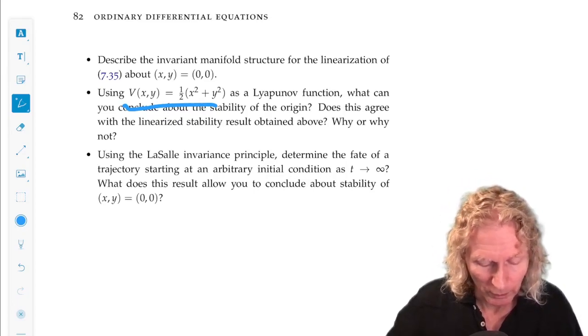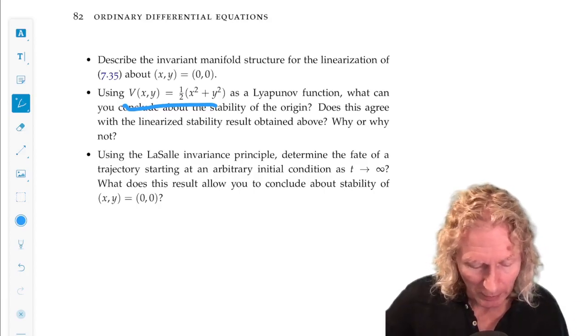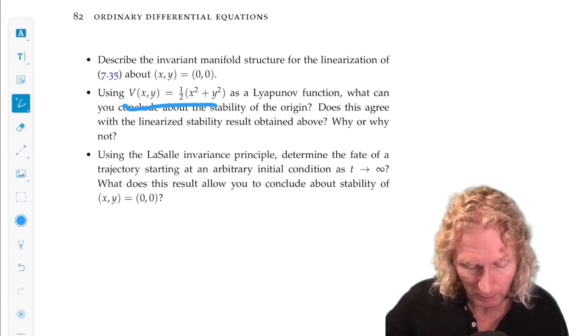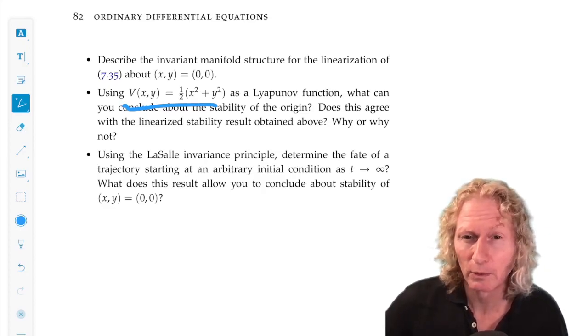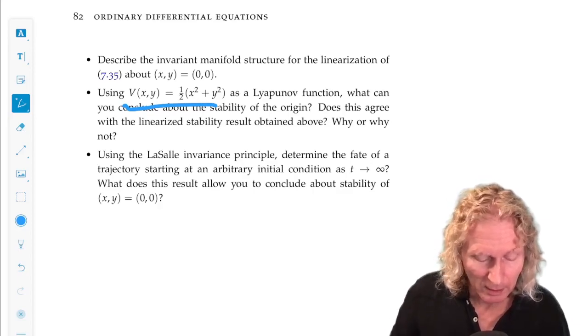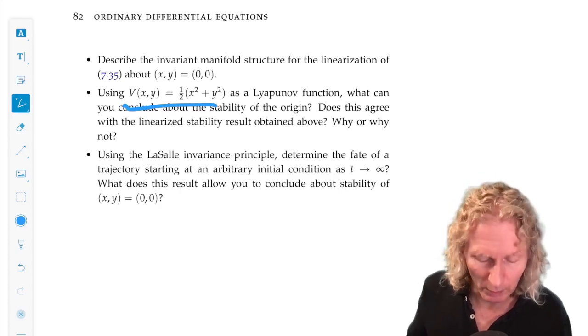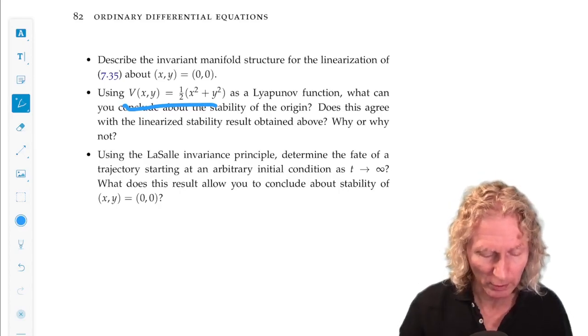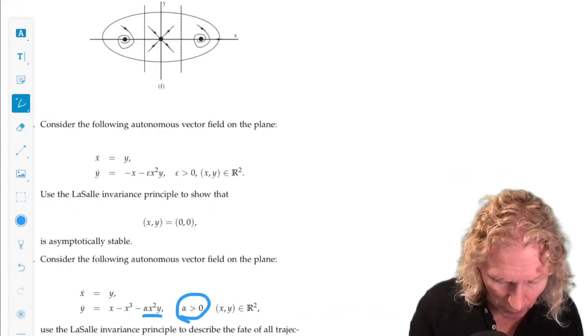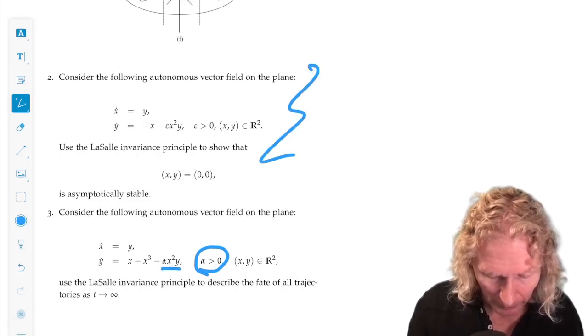And then I want you to finish this off by using the LaSalle invariance principle. Determine the fate of the trajectory starting at an arbitrary initial condition as t goes to infinity. And what does this result enable you to conclude about stability of the origin? And that is not unrelated to this problem here.